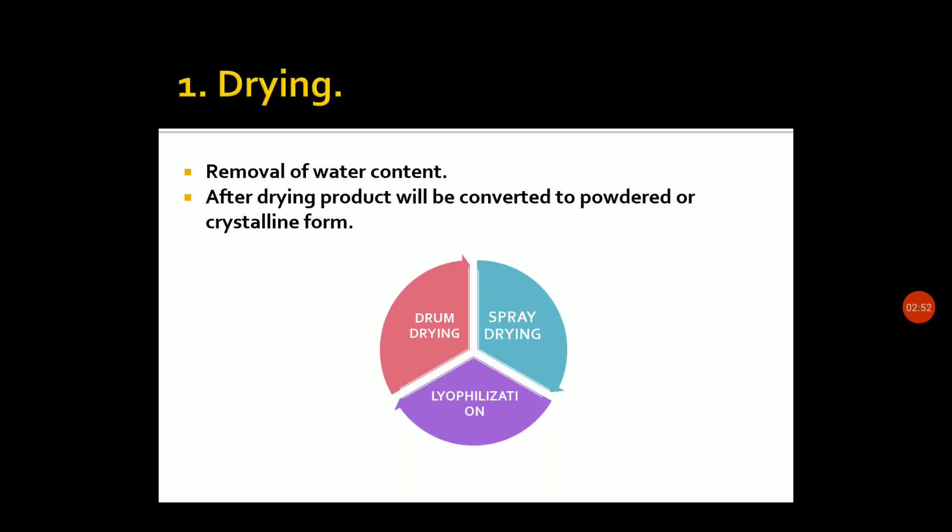First, drying. Drying is done to remove the water content. After drying, the product will be converted into powdered or crystalline form. Once we dry the product, we can obtain the product as powdered or crystalline form.